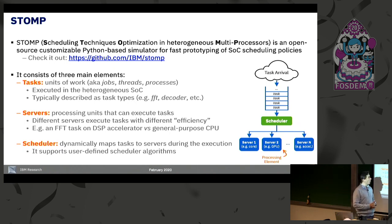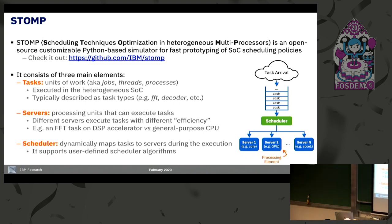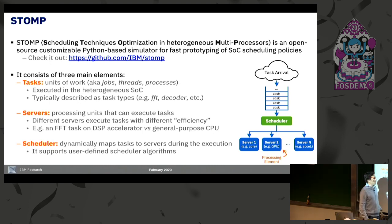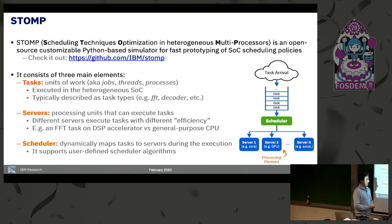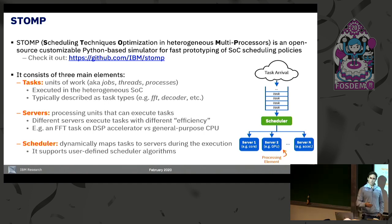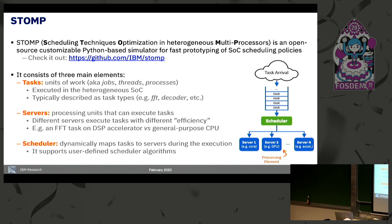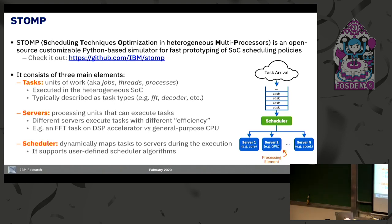In STOMP there are basically three main elements. First, we have tasks — the units of work; you can call them jobs, processes, or threads. We talk about task types: FFT tasks, decoding tasks, convolution tasks. Then we have servers or processing elements — the blue boxes — which are the processing units in your chip. You can have different types: general-purpose cores, GPUs, and different accelerators. This is all customizable. The most important part is the scheduler — the green box — which takes tasks from a queue and schedules them across available processing elements.